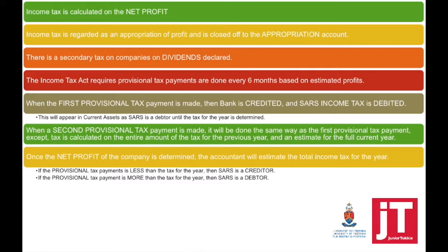If we still owe SARS money, they are regarded as our creditor, which will appear in your trade and other payables under current liabilities. If they owe us because we've paid too much, they will become our debtor, and it will appear in your current assets under trade and other receivables. So SARS income tax appears in the balance sheet, but it can either be a current asset or a current liability.